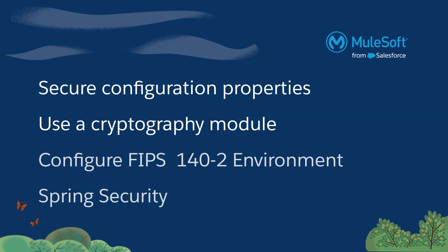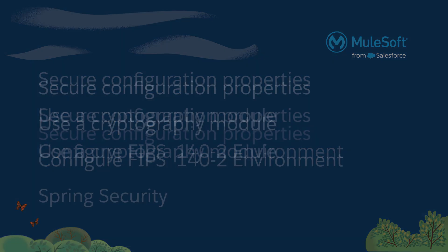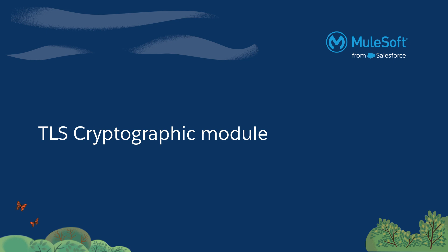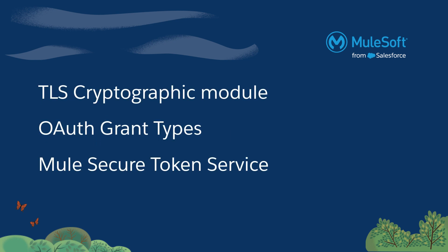You can secure your flows with Spring Security, configure TLS cryptographic protocol, obtain access to protected resource services using OAuth grant types, and configure Mule Secure Token Services. Now, let's head over to Anypoint Platform and review all the security policies, security configuration, and learn how to build a secure integration infrastructure.